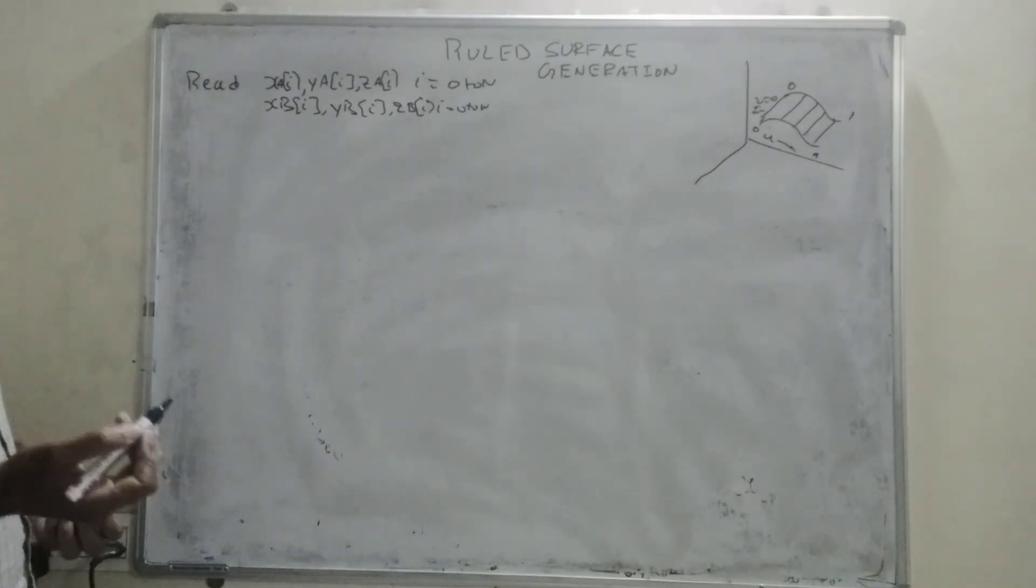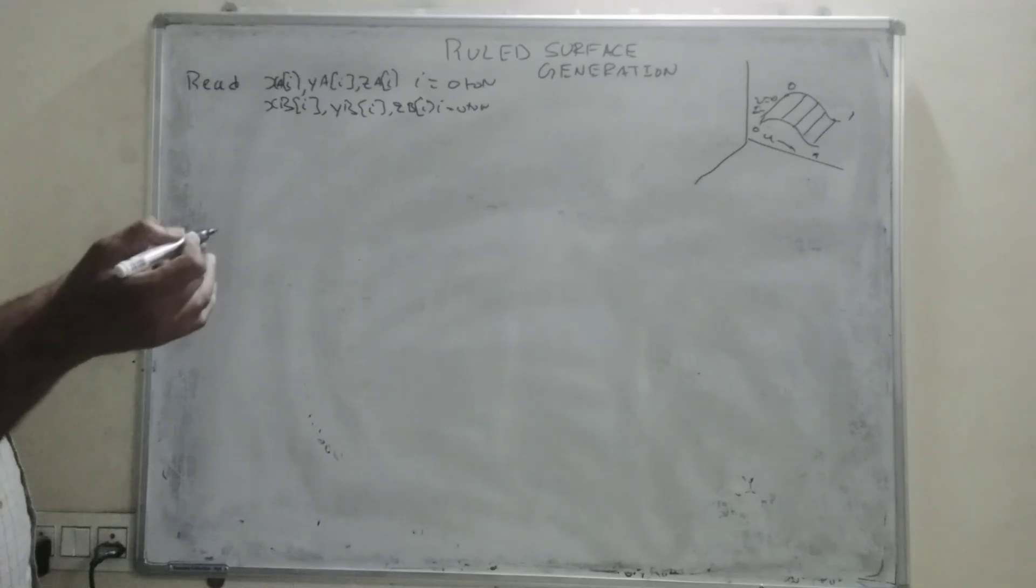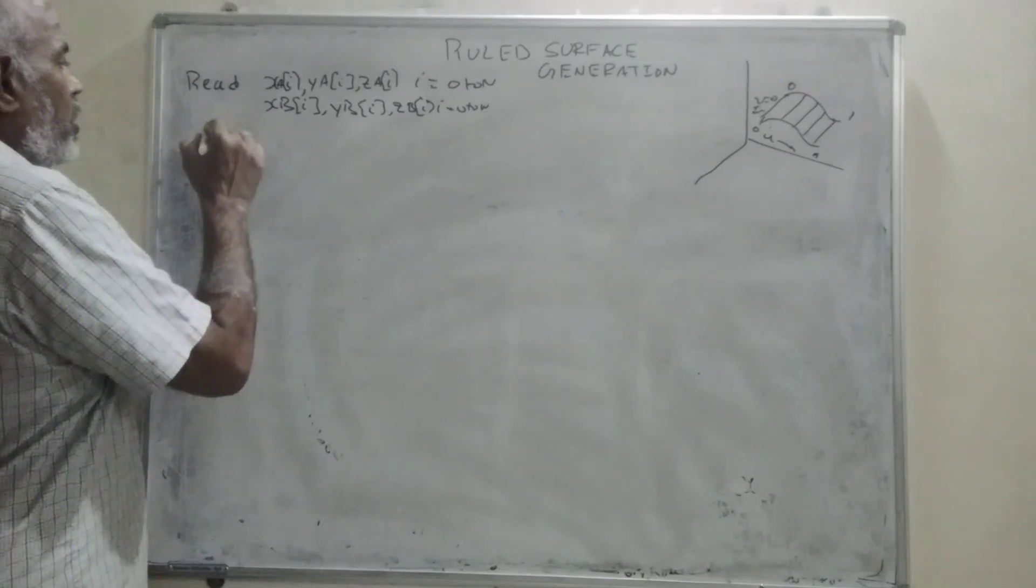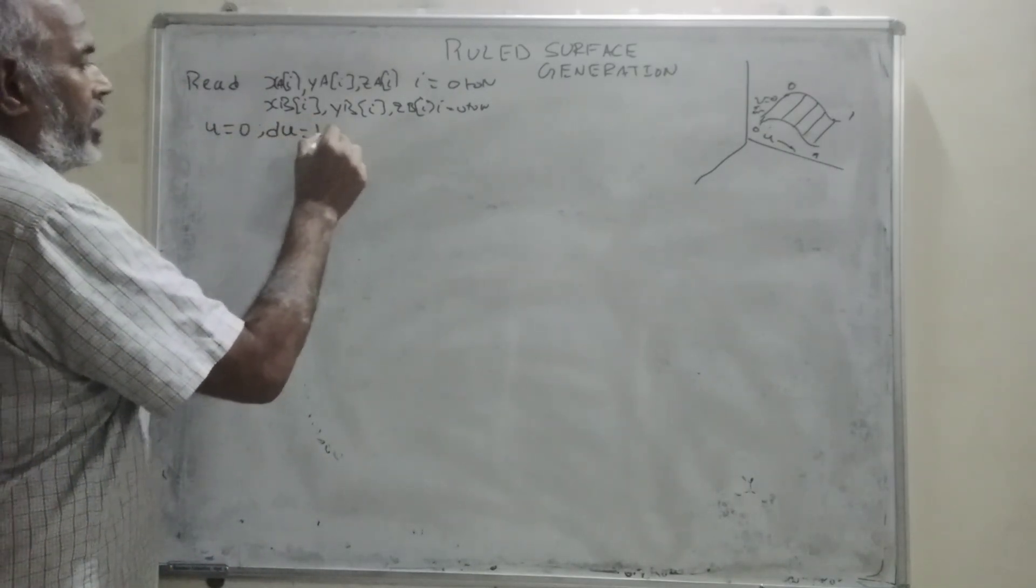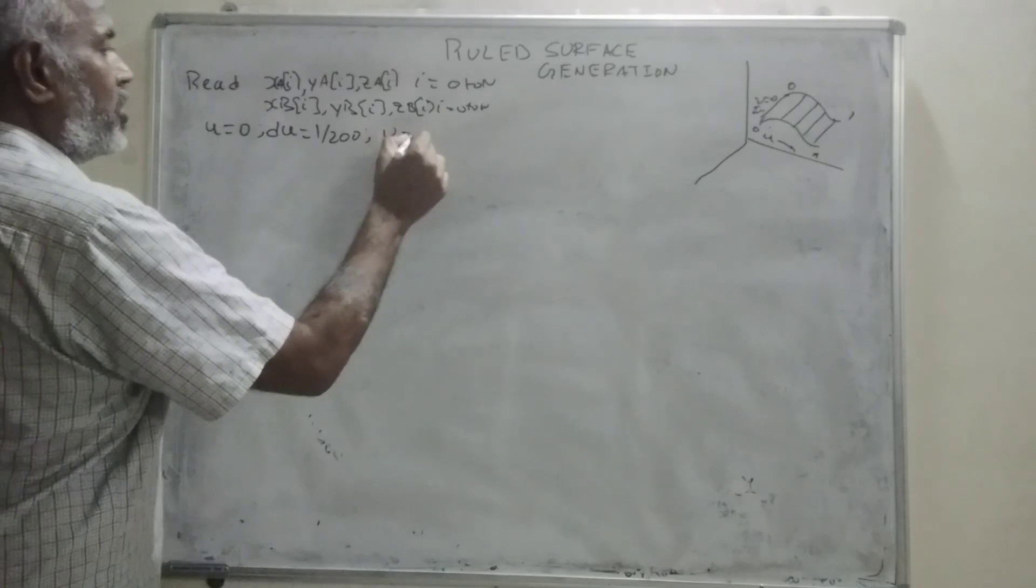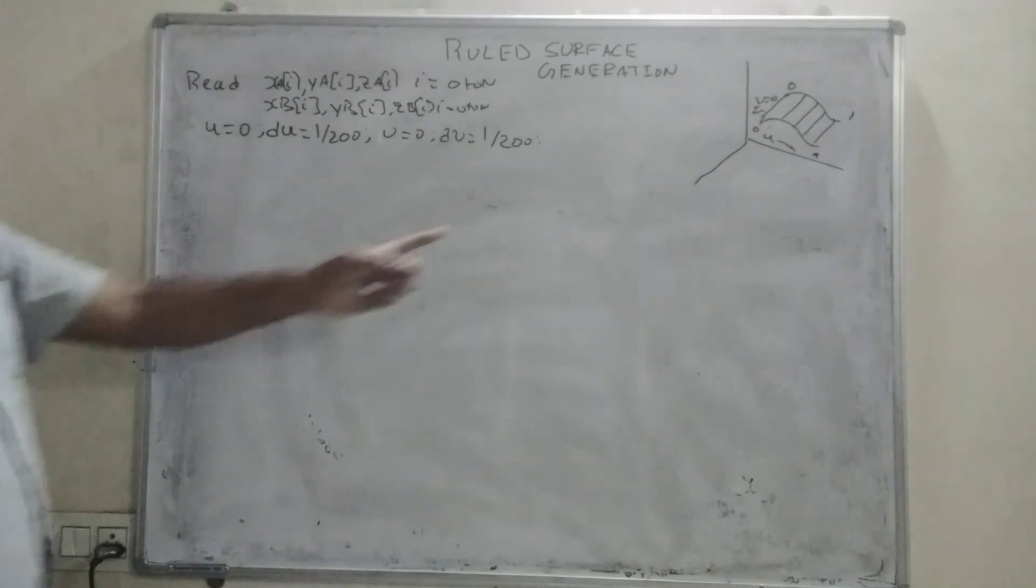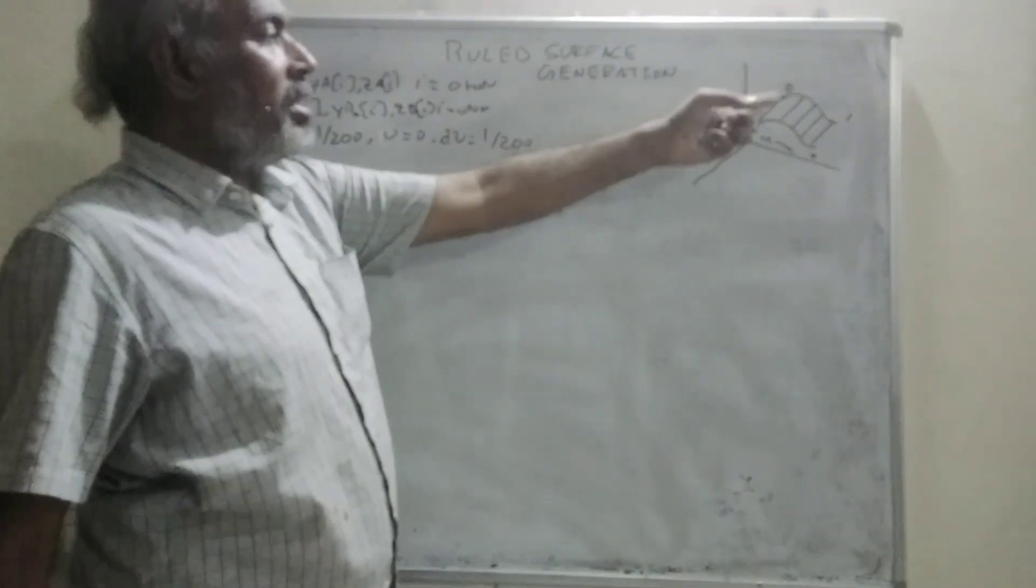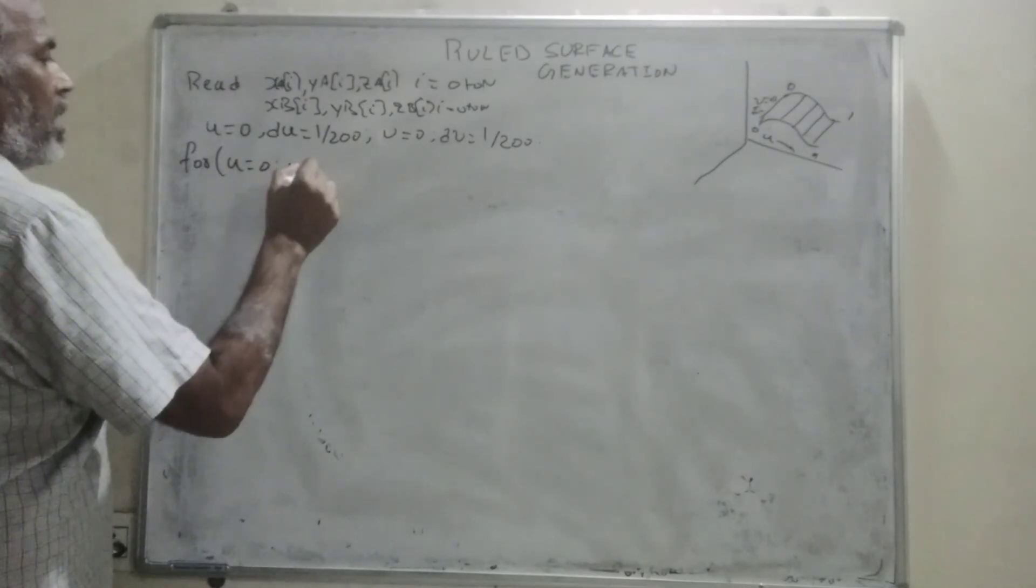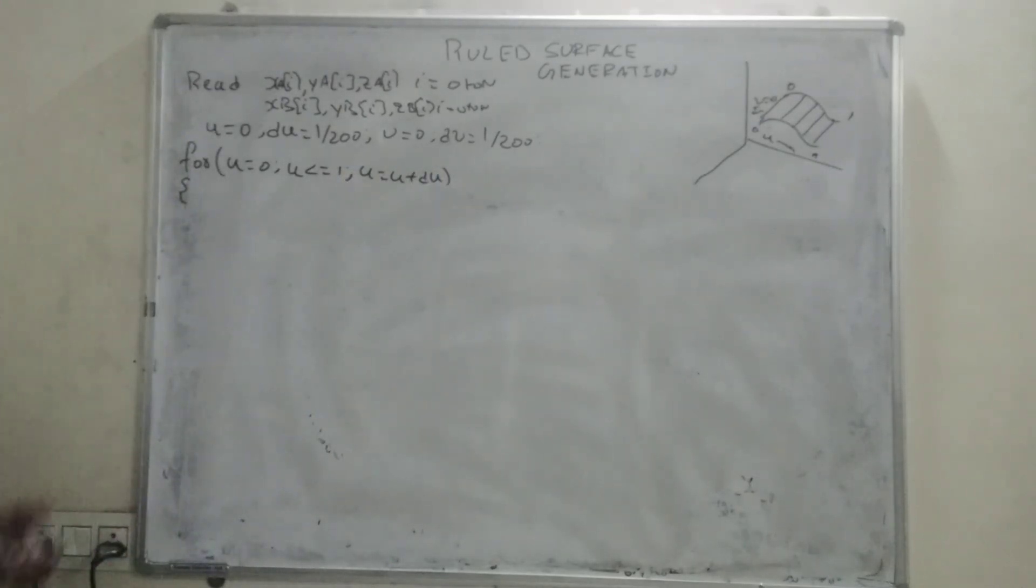These two control points have to generate two curves, this is the basis of this and this is the basis of that. u equals 0 and du equals 1 by 2. u is for incrementing the two curves. Here I have for u equals 0, u less than or equal to 1, u equals u plus du. Here I have double increment at u for n times.